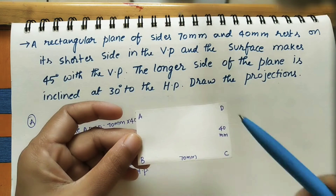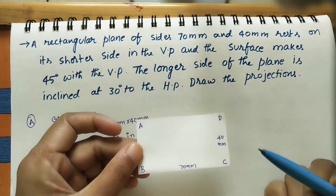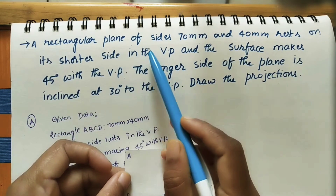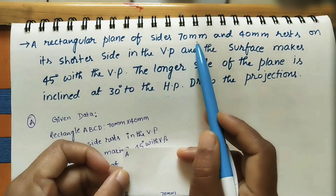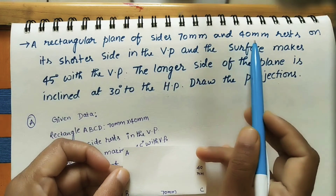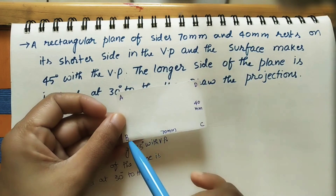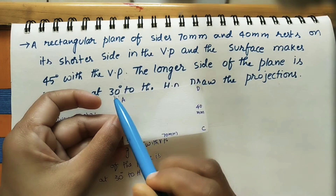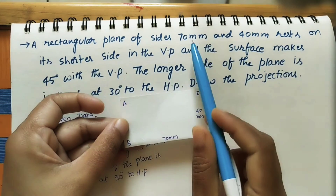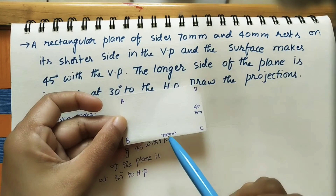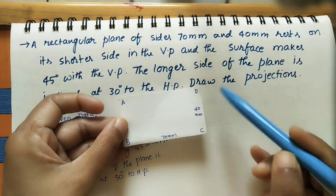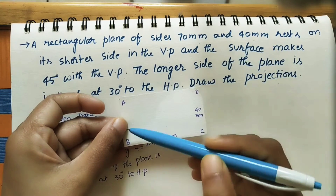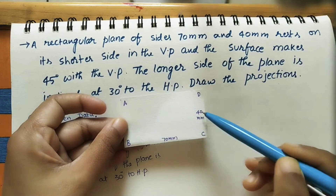I am giving the corners of this rectangle the names A, B, C, D. The given dimensions are: the sides of the rectangle are 70 mm and 40 mm. It has two longer sides of equal length — 70 mm — and this side and this side are 40 mm.